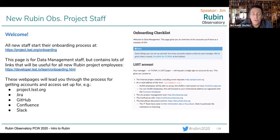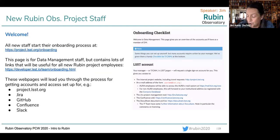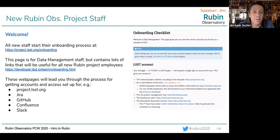Mostly what you're trying to do is get connected to all the different communication channels that Rubin Observatory uses: GitHub, Slack, Confluence, JIRA, and project.lsst.org, all of which talk to each other and talk to different parts of the staff. Note that science experiments like DESC have their own systems for communication. It's the staff that makes the observatory possible, makes the data reduction happen, and allows you to use the science platform to do all the science you want to do. Welcome to the team, everyone.